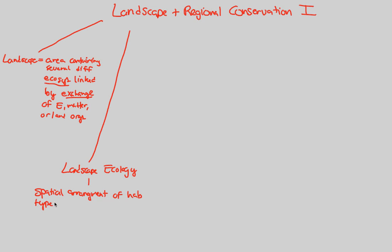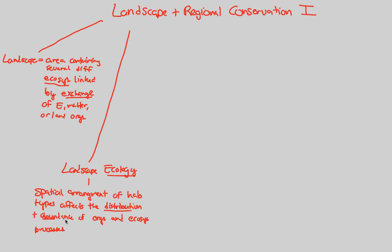What's key from the ecological standpoint is that the spatial arrangement of habitat types affects the distribution and abundance of organisms, plus ecosystem processes — those biogeochemical cycles, for example. And with a landscape ecological mindset, we are looking at ecosystems linked by exchange of energy and matter.